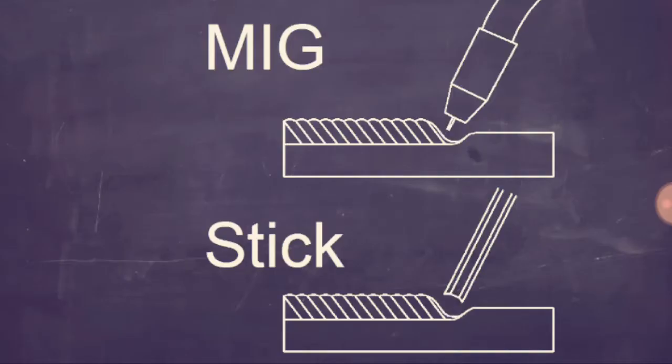You see, in a lot of other welding processes, the electrode melts and becomes filler metal. Those are consumable electrode processes.